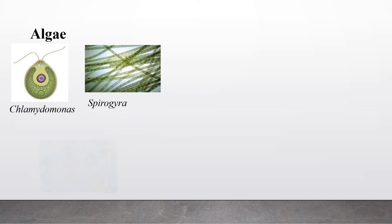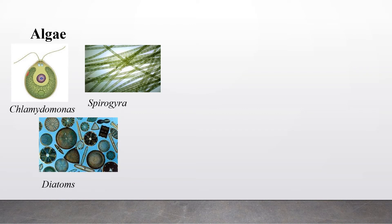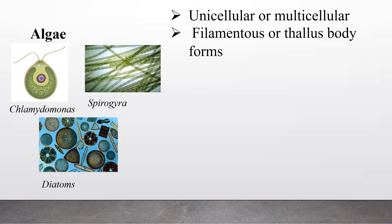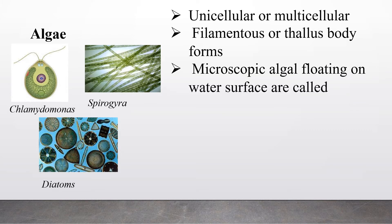Now we are going to learn about algae. Examples include chlamydomonas, spirogyra and diatoms. Algae are unicellular or multicellular. There are two types of body forms in algae: filamentous and thallus body forms. An example of the filamentous body form is spirogyra, and an example of the thallus body form is chlamydomonas. Some microscopic algae float on the water surface and are known as phytoplankton. Examples are diatoms.